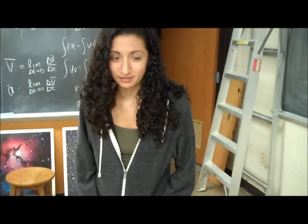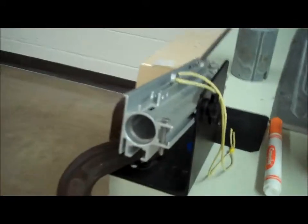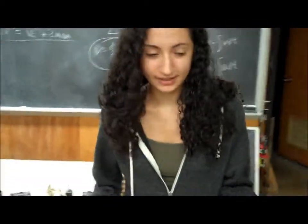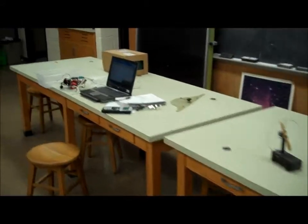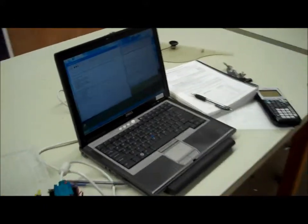This is my projectile launcher experiment. Using this little mini launcher, a ball was fired at a horizontal angle. Then, using the data I got from measurements, I wrote a computer model that would calculate various values — notably the horizontal displacement and the impact angle.